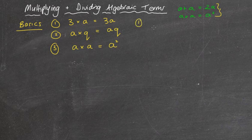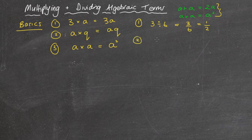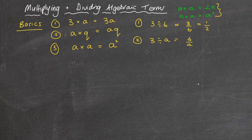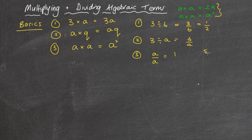If we look at dividing, 3 divided by 6 is the same as saying 3 over 6, or a half. 3 divided by a is the same as 3 over a, and a over a is the same as saying 1. Because if you divide anything by itself, like 5 divided by 5 equals 1, 3 divided by 3 equals 1, so a over a equals 1. Those are some of the main concepts. We're only looking at the easier ones today.